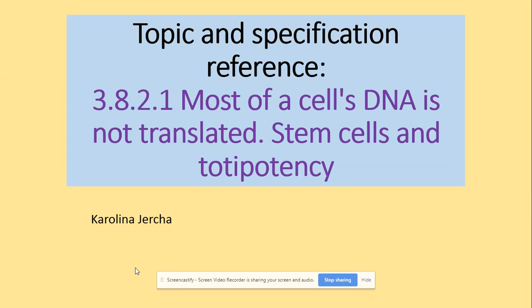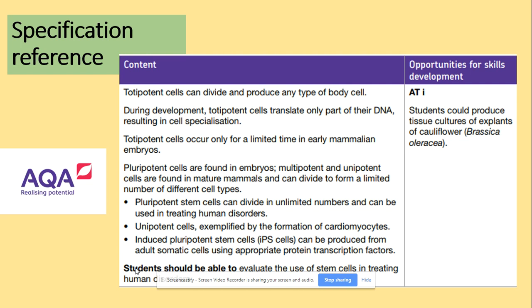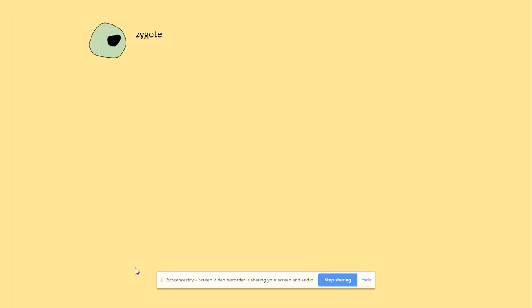Hi guys, welcome to stem cells and totipotency. You need to be able to state what totipotent cells are, explain how cells lose their totipotency and become specialized, describe cell differentiation and cell speciation, describe the origins and types of stem cells, and explain how pluripotent stem cells can be used to treat human disorders. This is our specification for today, so let's get started.